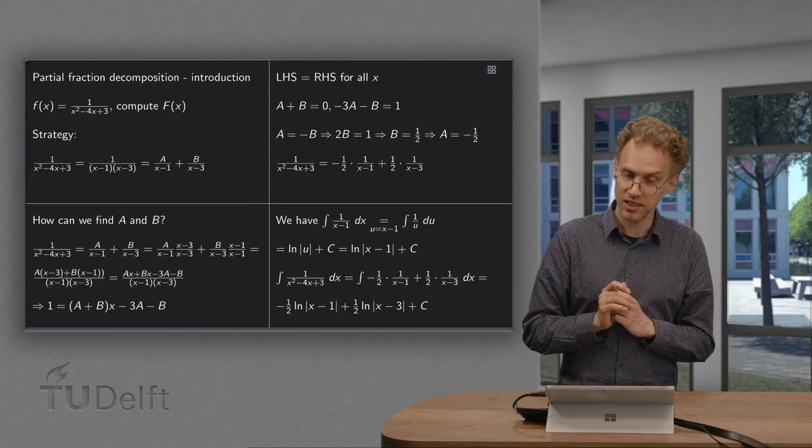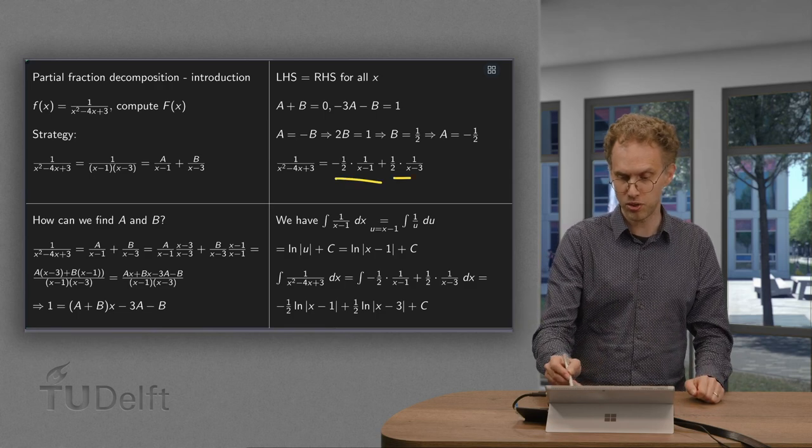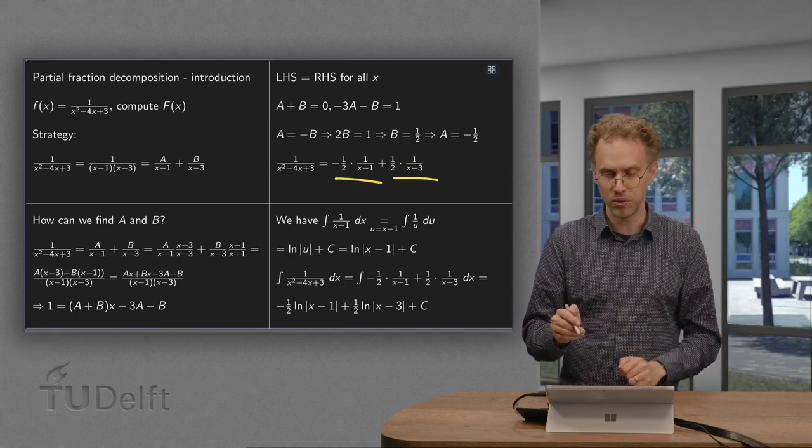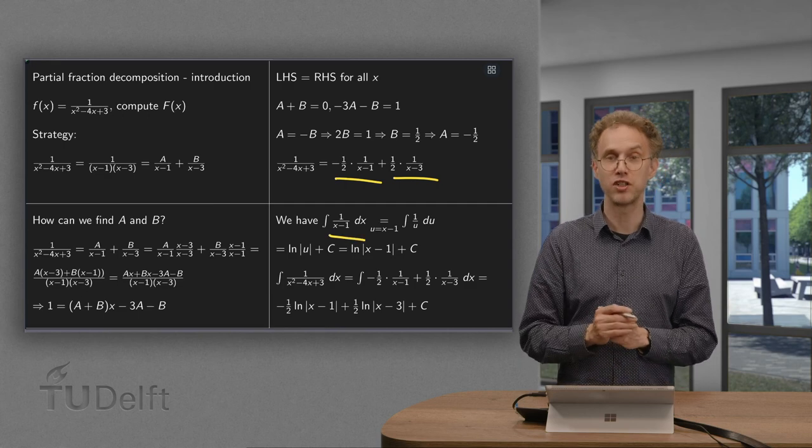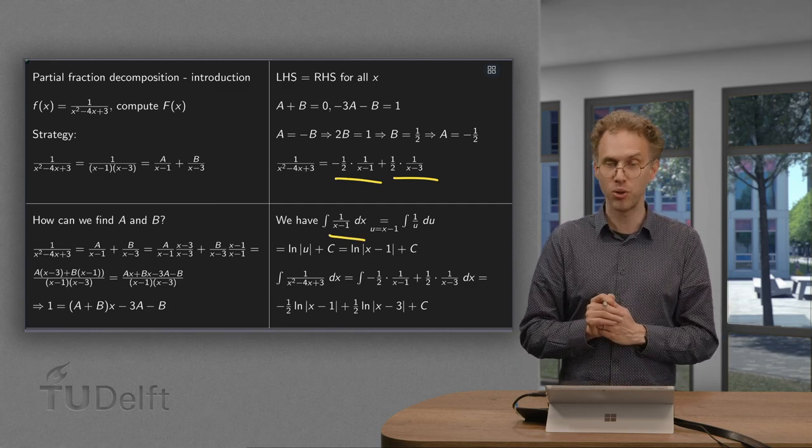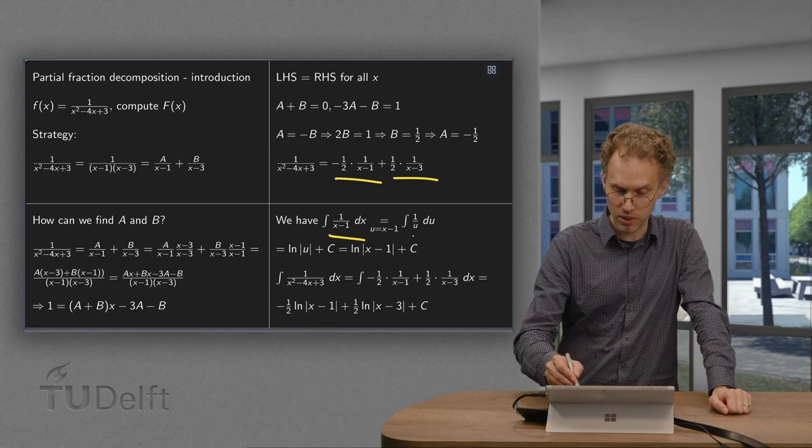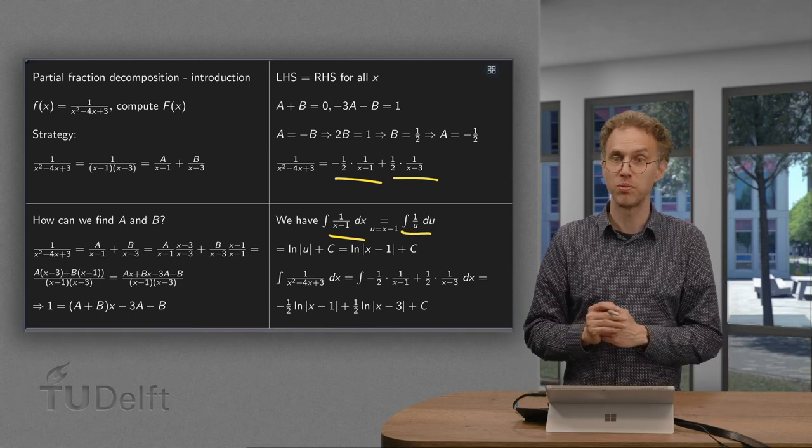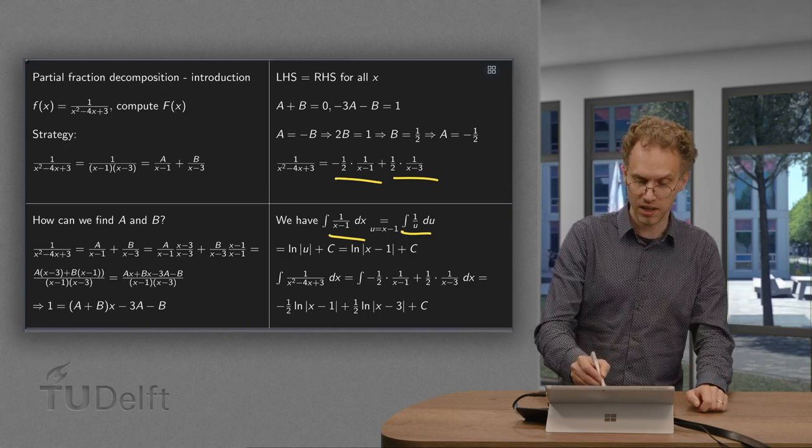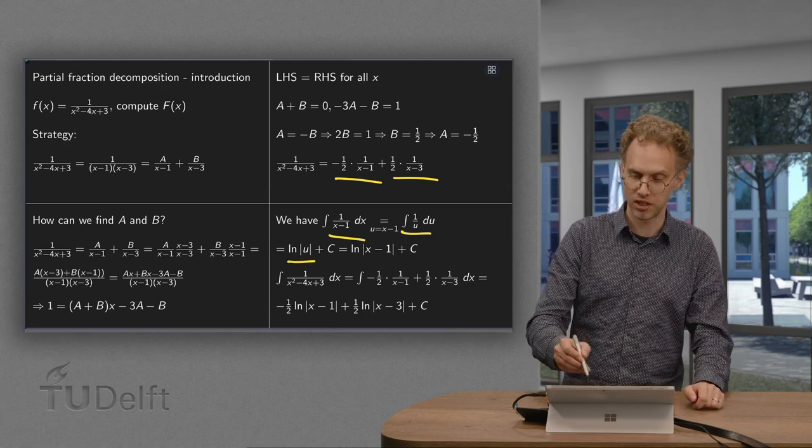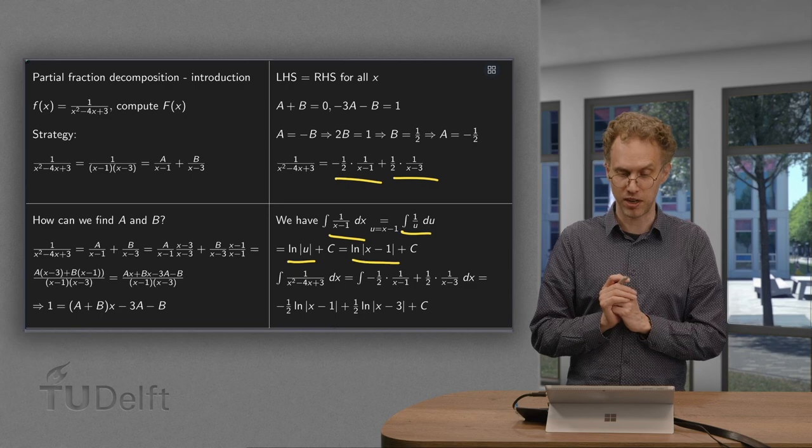Now we can integrate this because we can integrate these two terms. How? If we have 1 over (x minus 1), we use the substitution rule: u equals x minus 1, du equals dx. So 1 over (x minus 1) becomes 1 over u. Integrating gives ln of u plus constant, which equals ln of (x minus 1).